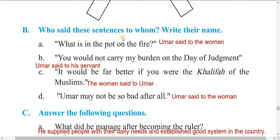Now, who said these sentences and to whom? First: 'What is in the pot on the fire?' — Umar said this to the woman. Second: 'You would not carry my body on the day of judgment' — Umar said this to his servant. Third: 'It would be far better if you were the Khalifa of the Muslims' — the woman said this to Umar.